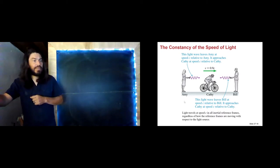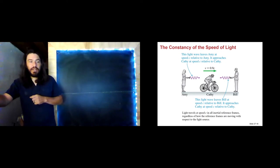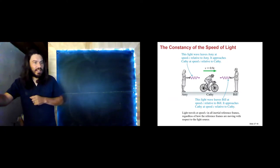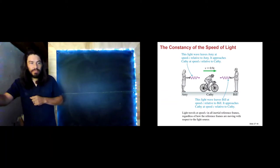Kathy is riding at 0.9C. Amy is shining a flashlight behind her, and Bill is shining a light towards her. Kathy measures the speed of light as those light beams arrive at her. What does she get?